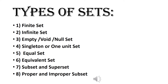After writing the definition of sets, write the types of sets. Number 1: Finite set. Number 2: Infinite set. Number 3: Empty, void, or null set. Number 4: Singleton or one-unit set. Number 5: Equal sets. Number 6: Equivalent set. Number 7: Subset. Number 8: Proper and improper subsets.